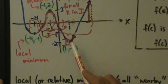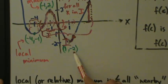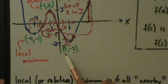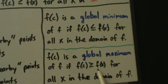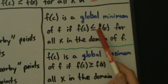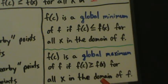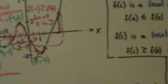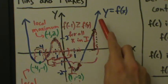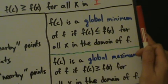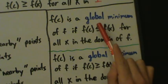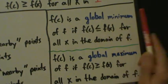We can clearly see from the graph that this is the lowest point — it's the smallest y-coordinate, negative 2. So negative 2 is the local minimum value, and it happens at x equals 1. There is a difference between what the value is and where it occurs. f of c is a global maximum of f if f of c is greater than or equal to f of x for all x in the domain of f. This function doesn't have a global max because any value of y you find, you can always find a larger one.